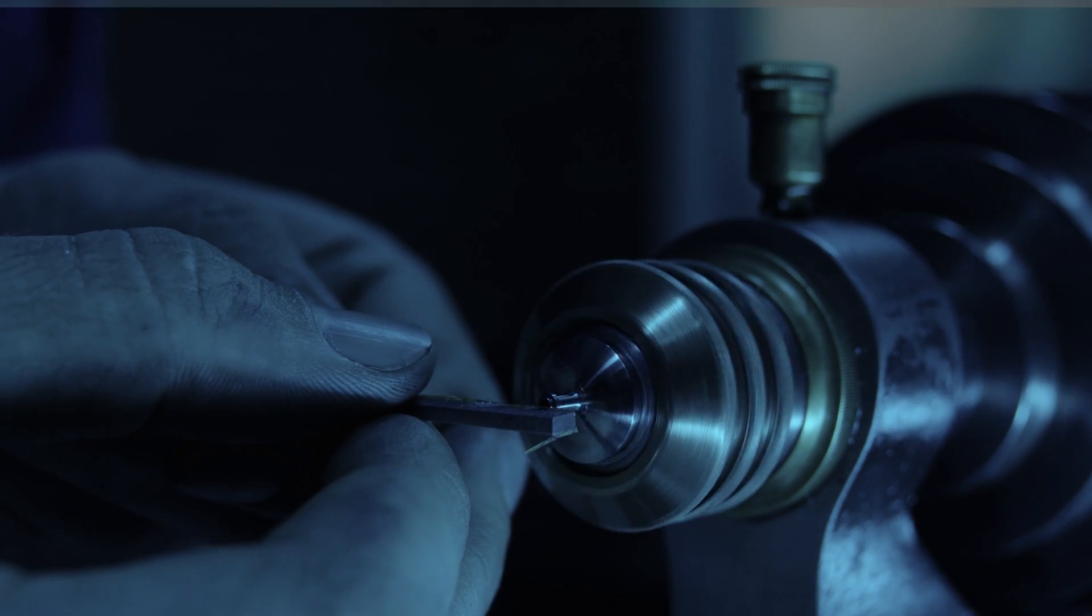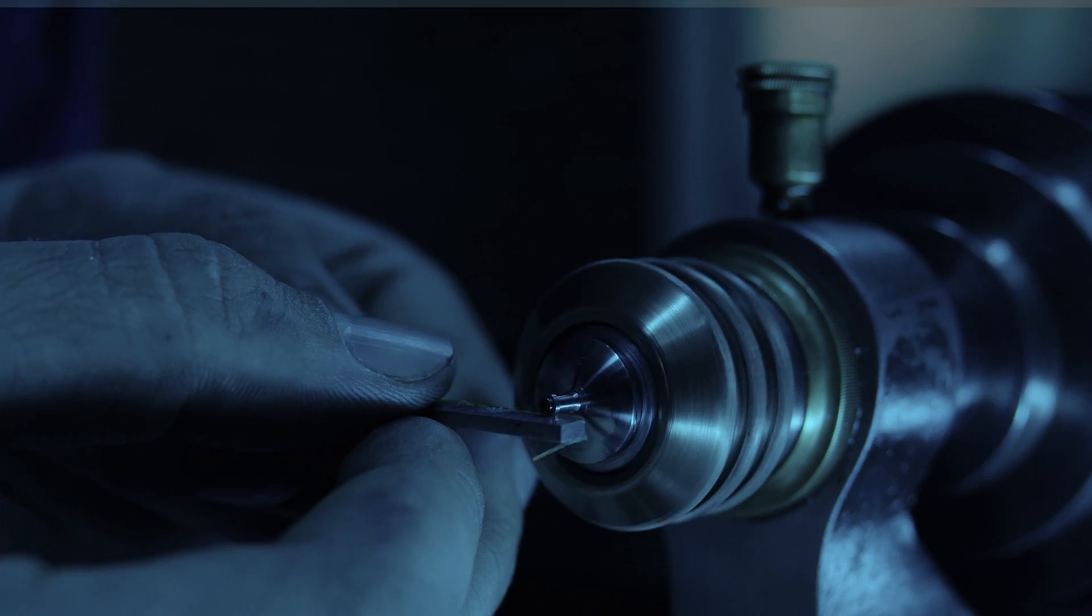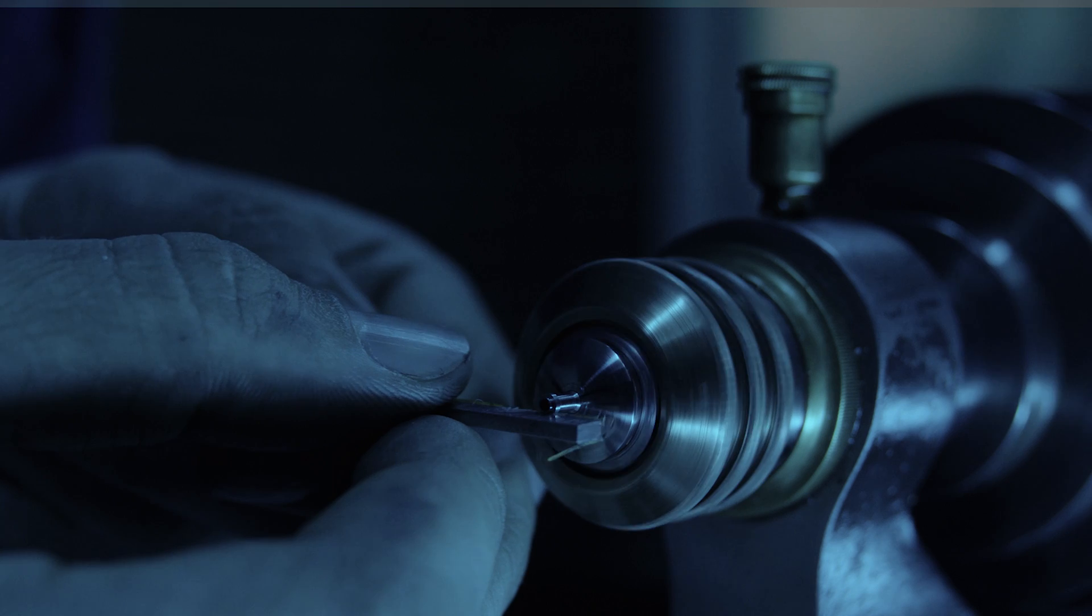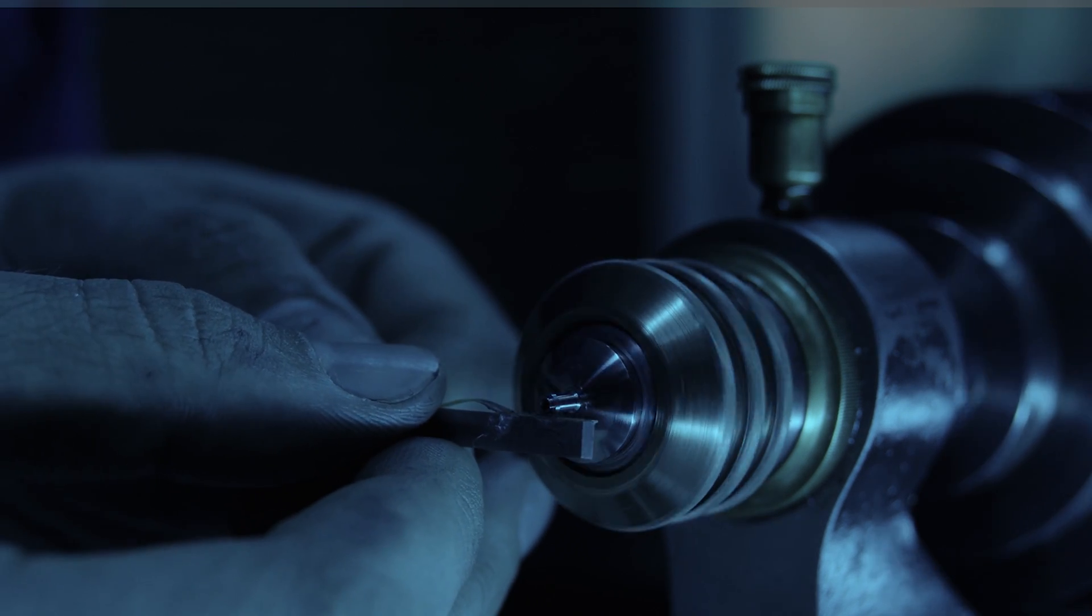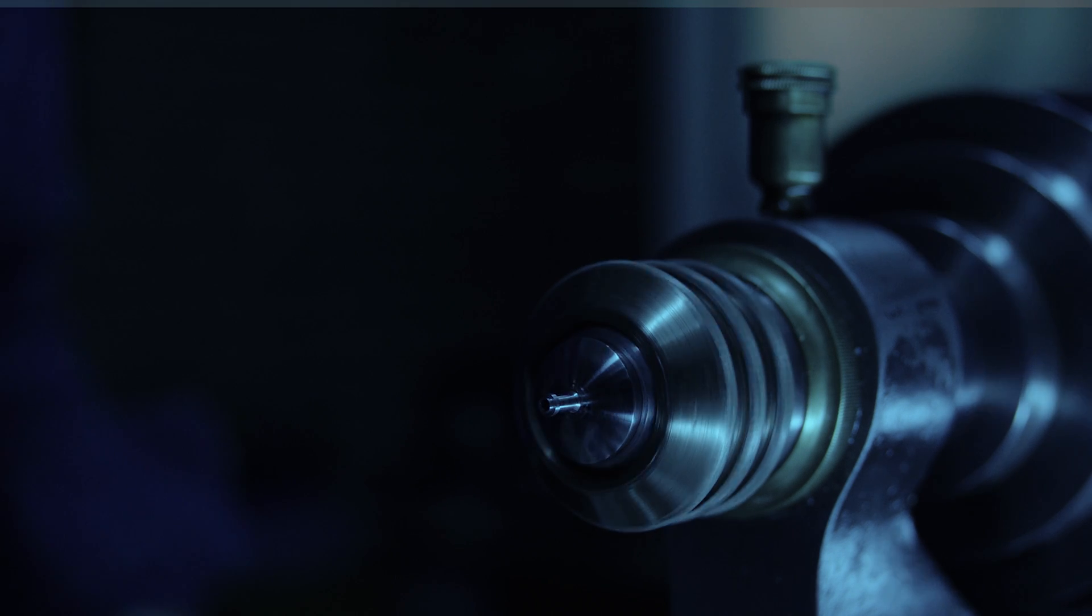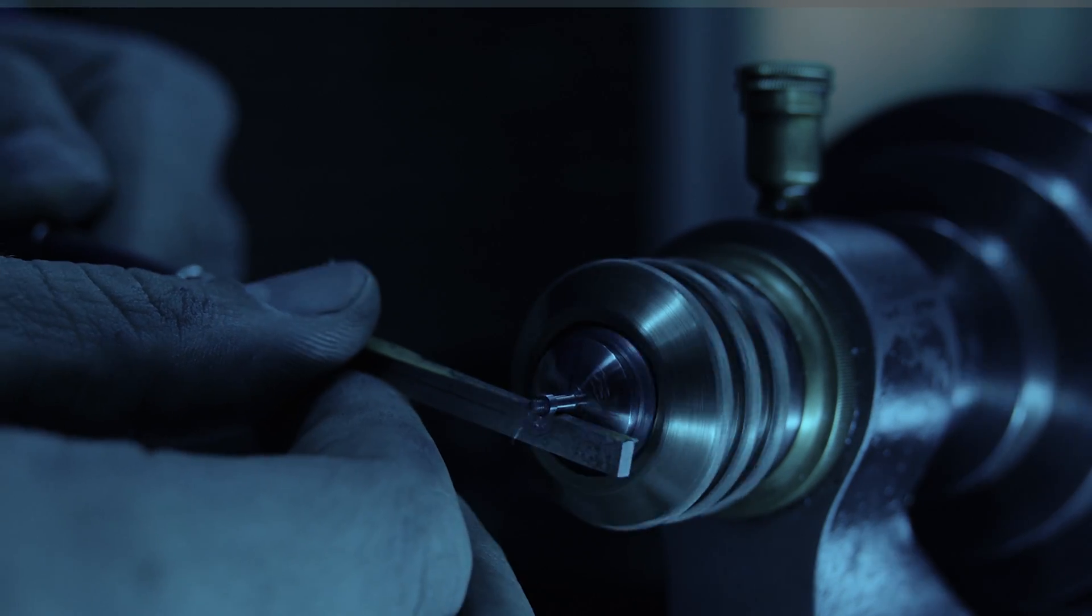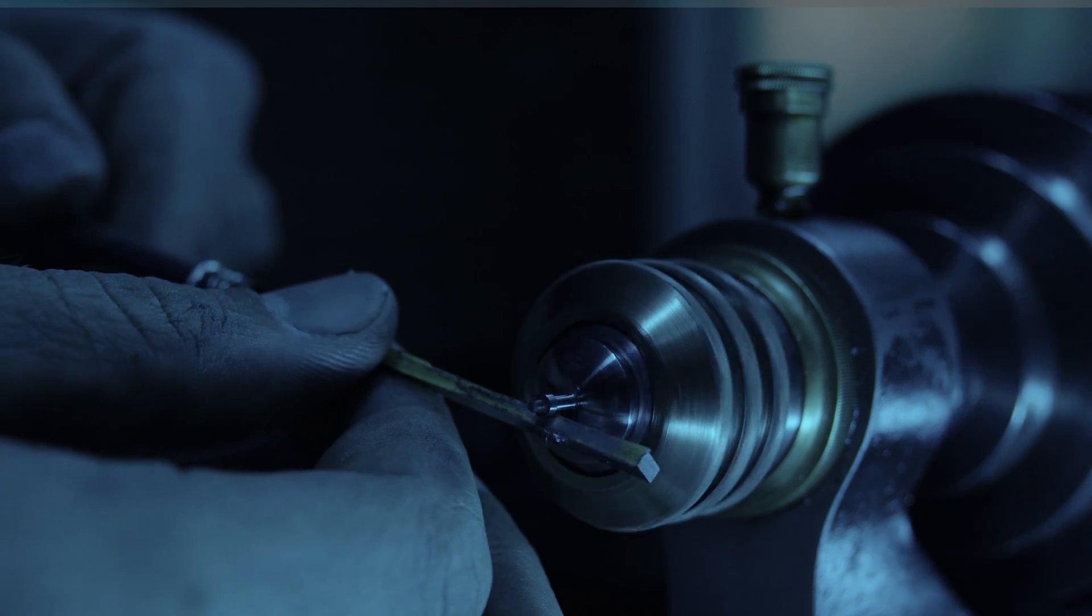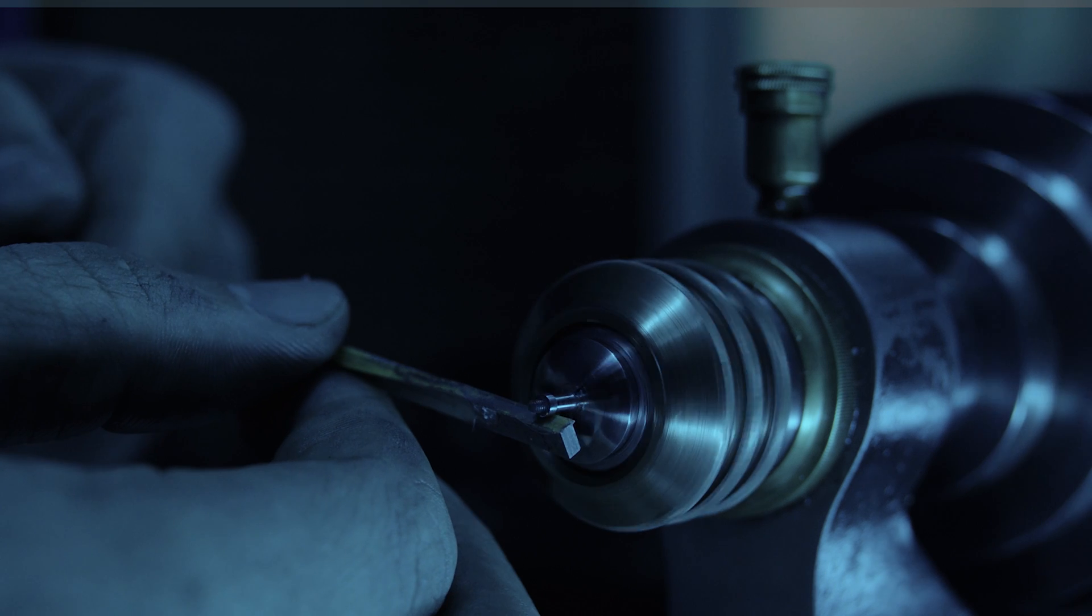Here I am using some micron paper glued to a watchmaker's pivot burnisher. This removes the oxide layer and the scaling that was formed during the hardening process. The pillar is reversed and the process is repeated. It is very important when polishing that the sharp corners and edges are not rounded over.